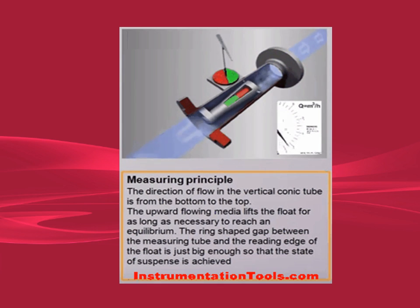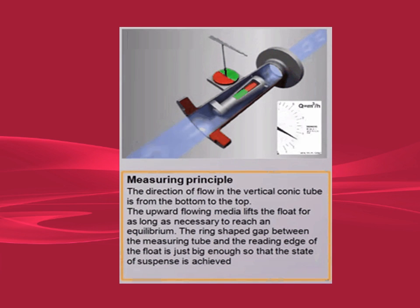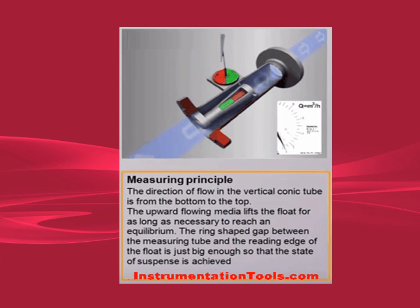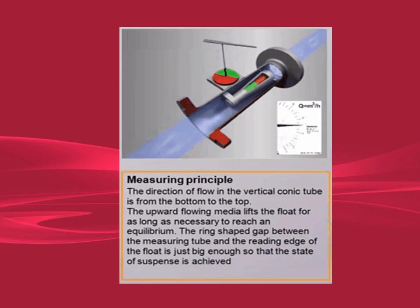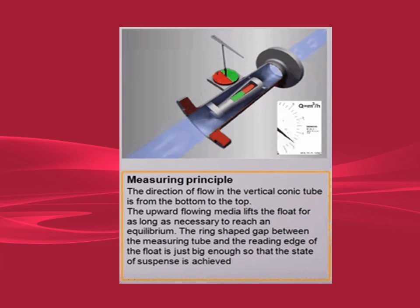A rotameter consists of a tapered tube, typically made of glass, with a float made either of anodized aluminum or a ceramic inside, that is pushed up by the drag force of the flow and pulled down by gravity.